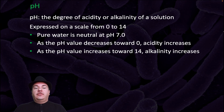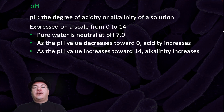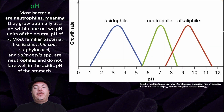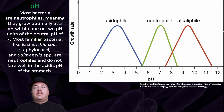pH can greatly affect the rate of microbial growth. pH is the degree of how acid or base-like a solution is, expressed on a scale from 0 to 14, where 7 is neutral. Numbers less than 7 are acids — the closer to 0, the stronger the acid. Numbers larger than 7 are bases or alkaline — the closer to 14, the stronger the base. Most bacteria are neutrophiles, meaning they grow optimally within one or two pH units of neutral pH 7. Familiar bacteria like E. coli, Staphylococcus, and Salmonella are neutrophiles and do not fare well at the acidic pHs of the stomach.